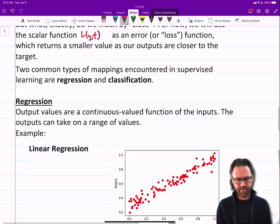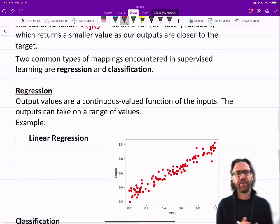Two common types of mappings encountered in supervised learning are regression and classification, two basic types of datasets.